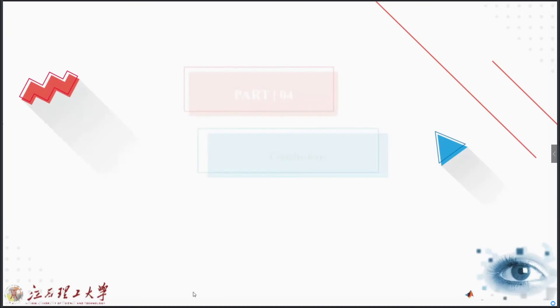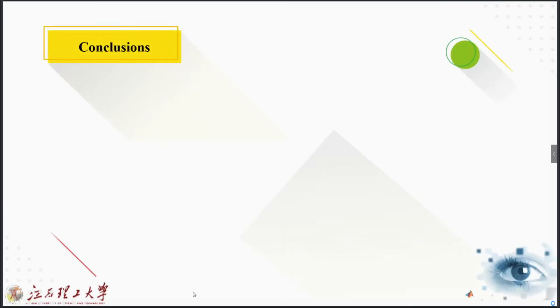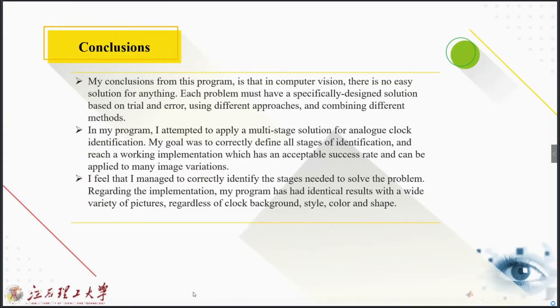Let's go to part four, which is conclusion. From this project I understood that in computer vision there are no easy solutions for anything. Each problem must have a specifically designed solution based on trial and error using different approaches and combining different methods. In my program, I attempted to apply a multi-stage solution for analog clock identification. My goal was to correctly identify and define all stages of identification and reach a working implementation which has an acceptable success rate and can be applied to many image variations. I feel that I managed to correctly identify the stage needed to solve the problem.